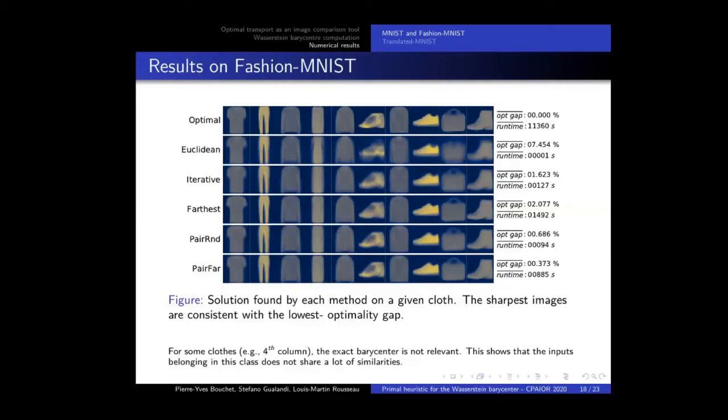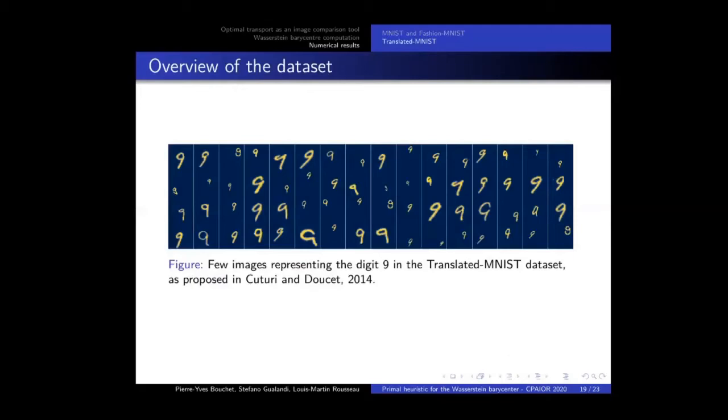For MNIST, it works well. For fashion MNIST also. The important aspect is all the heuristics give a result which is close to the optimal one. But this is for easy datasets. We wanted to stress test with a harder one, so we crafted translated MNIST. On this dataset, we start from MNIST images, and we resize and translate it into a larger image. As you see here, with number 9, we have variable size and location of the digits. And we will use these larger images as inputs.